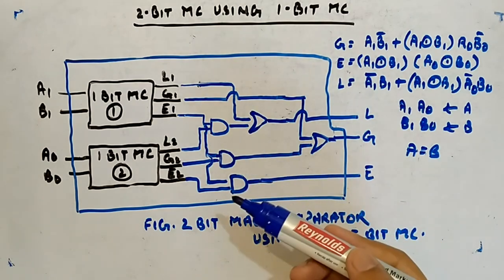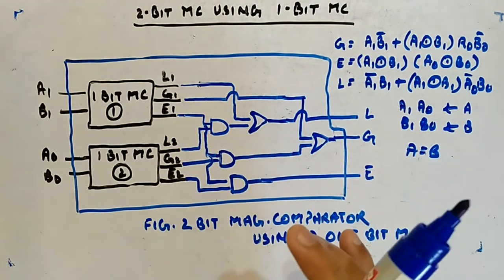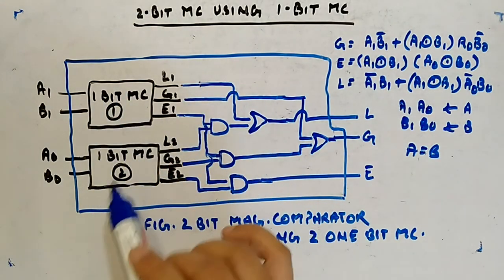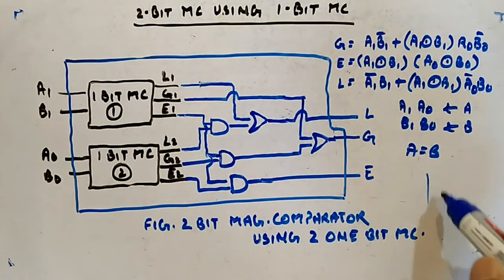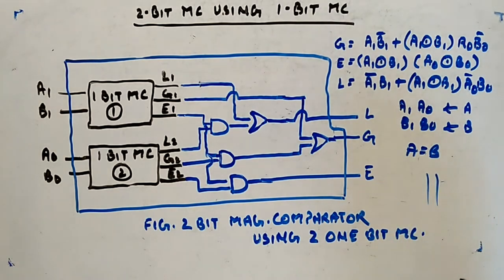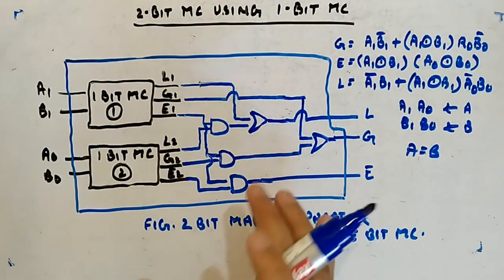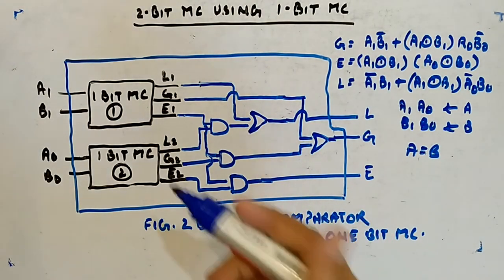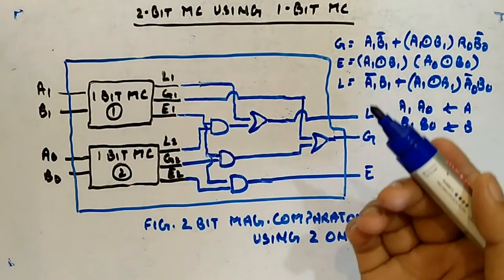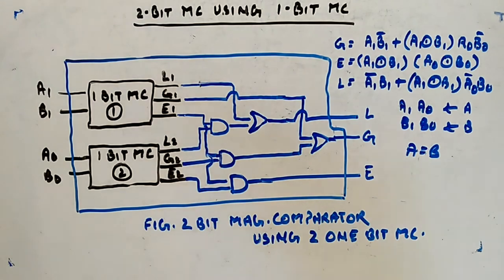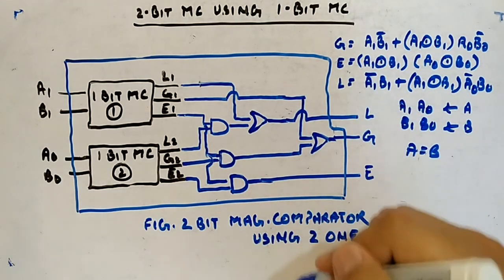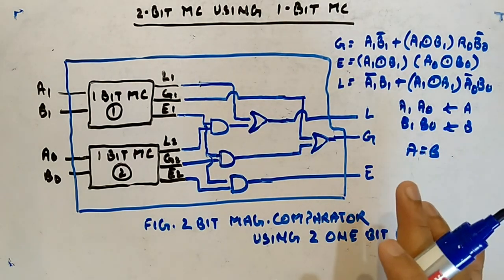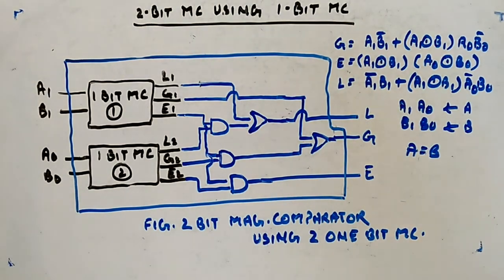With just a few AND and OR gates and already available one-bit magnitude comparators, you have made a two-bit magnitude comparator. This is a better way of designing rather than the expression-based approach. This method becomes even more useful for three-bit and four-bit comparators, where we will again use one-bit magnitude comparators to build larger ones and analyze which approach is better.